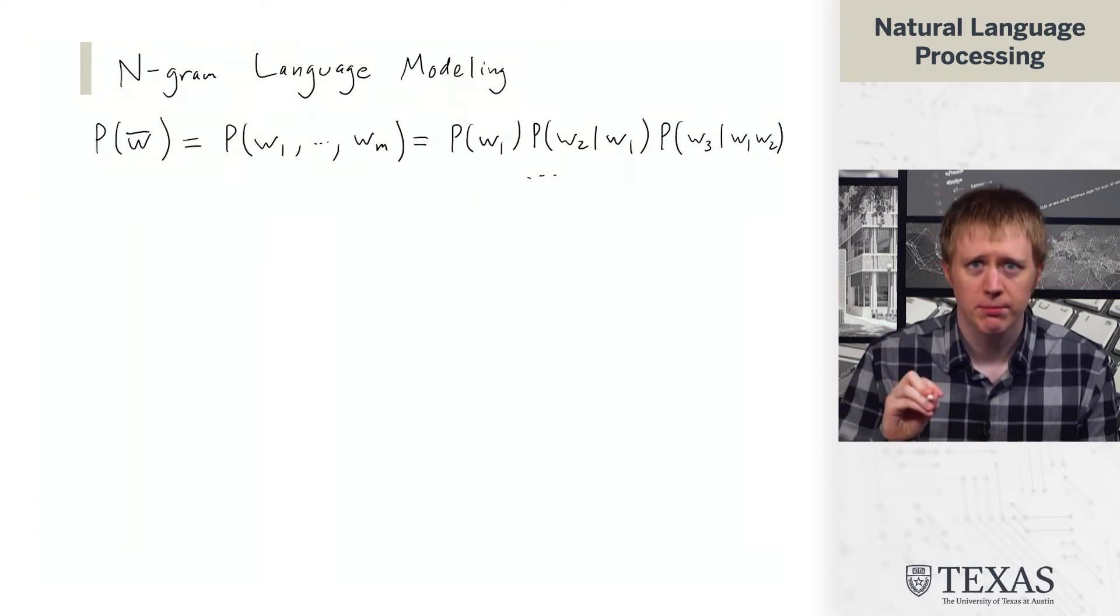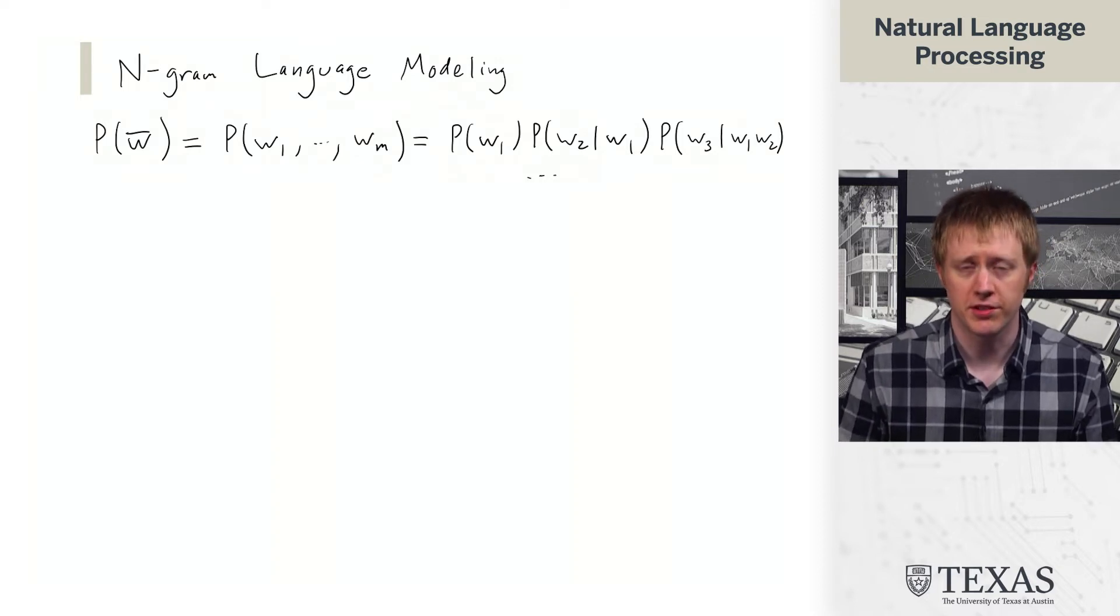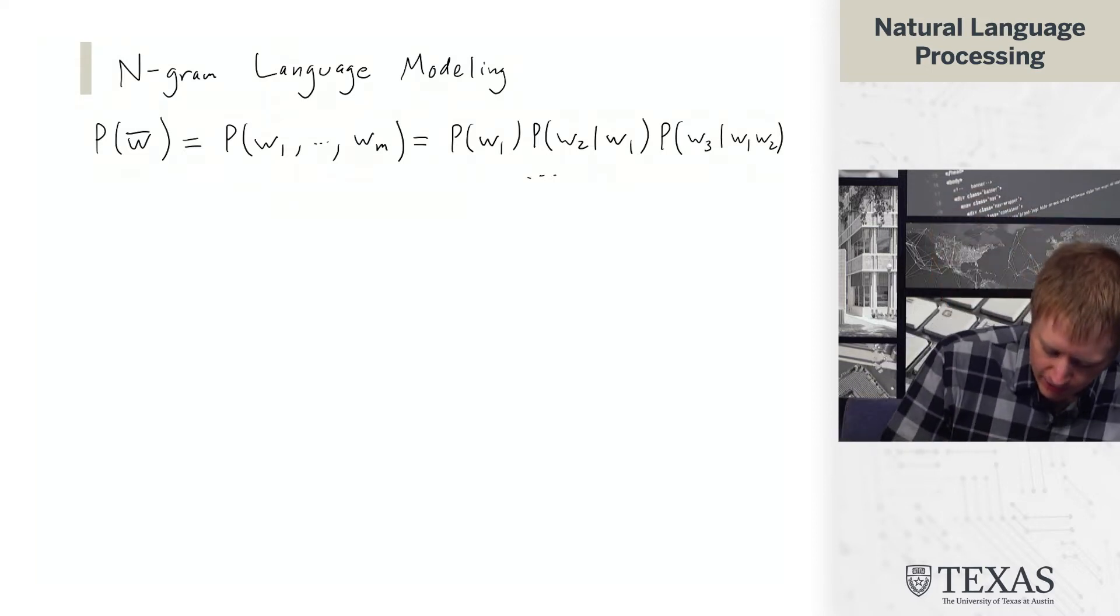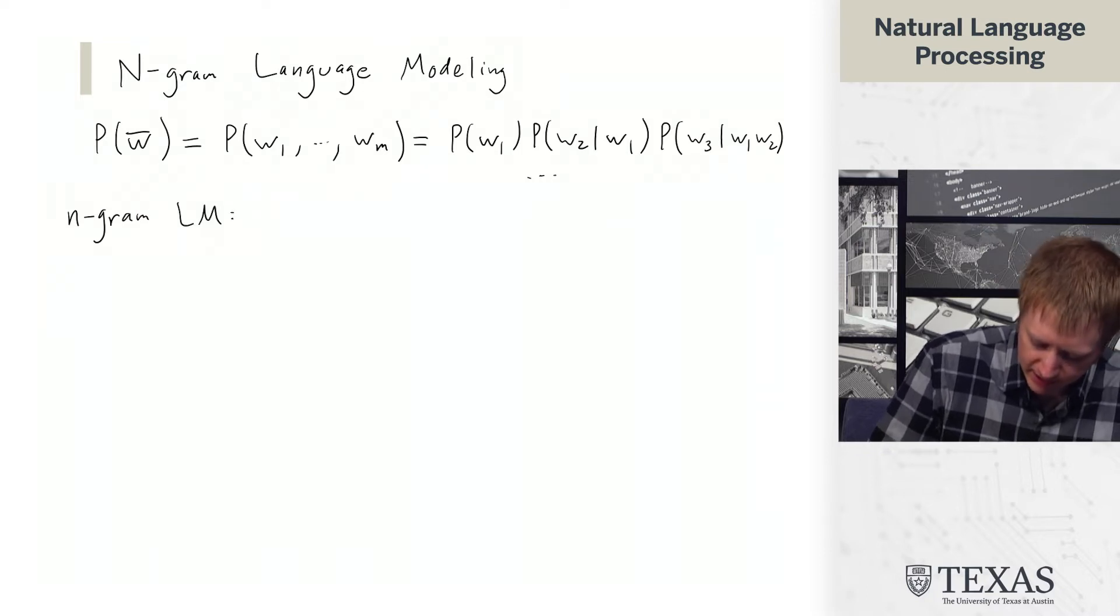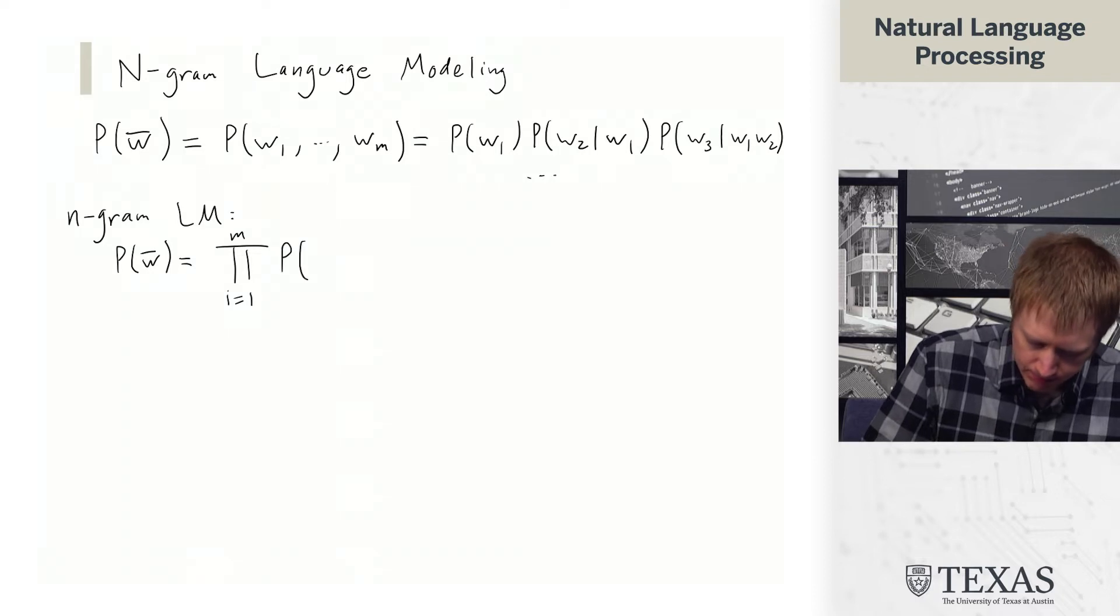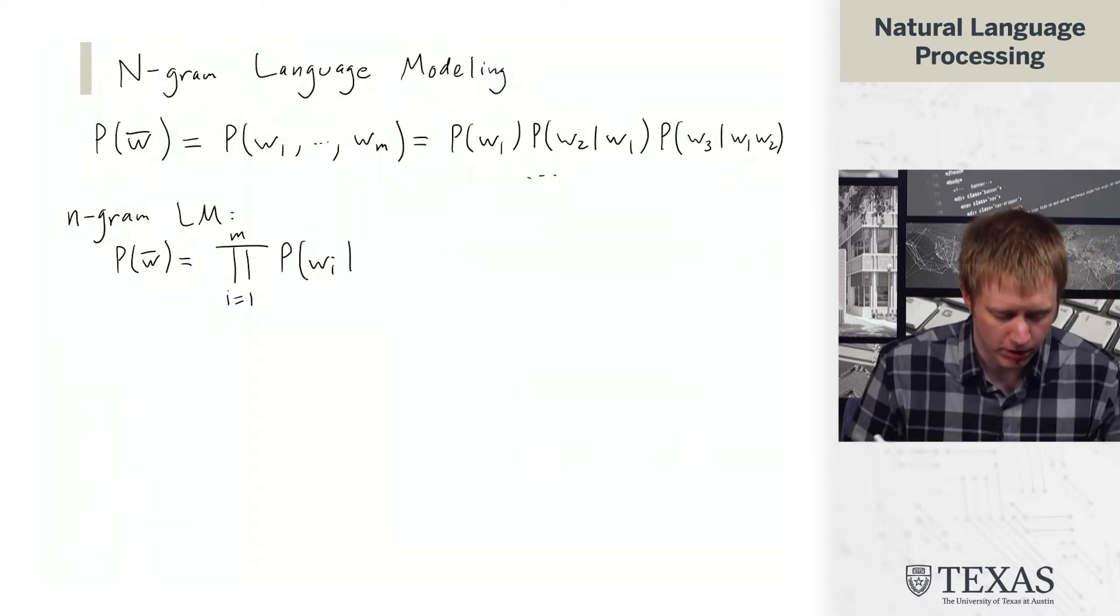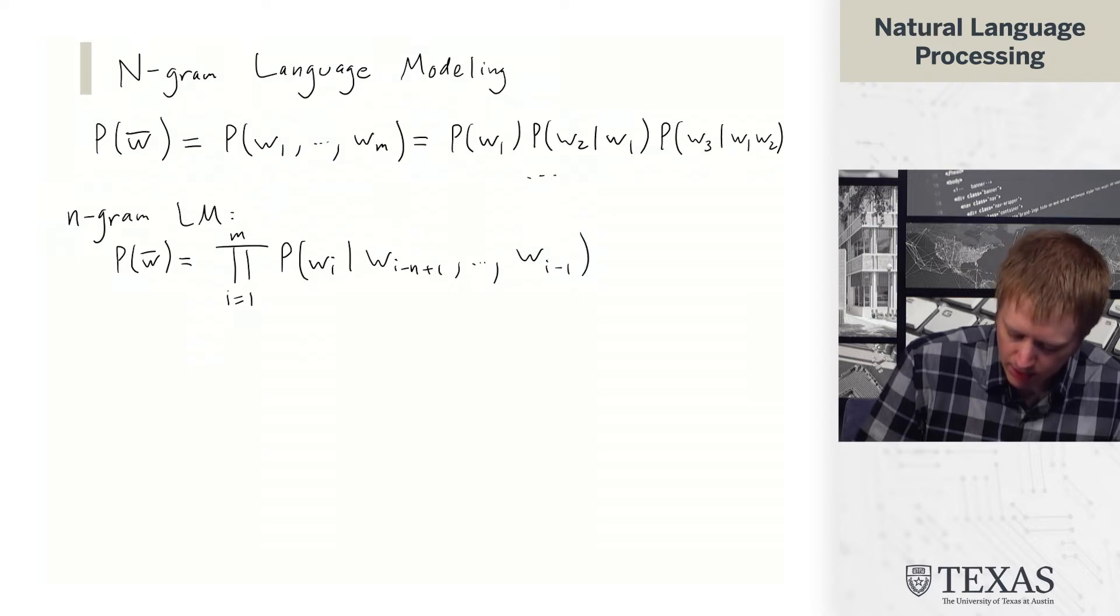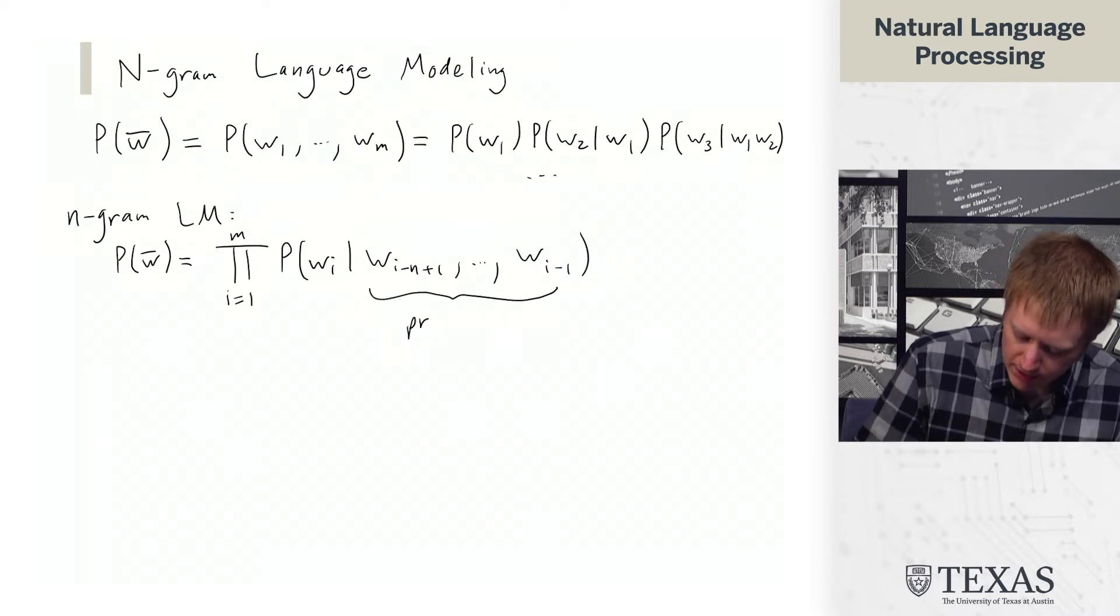Now, an n-gram language model makes a simplifying assumption about this distribution that's going to allow us to actually model it and do parameter estimation. So an n-gram LM defines P(w) in the following way: as the product of i equals 1 to m.